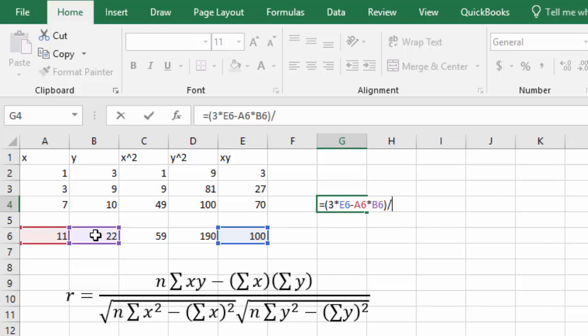Divided by, open a parenthesis for the denominator, and then we're going to do sqrt for the square root, and open a parenthesis. Sample size was 3, times the sum of the x squared, so I'll click that cell, minus the sum of the x's, squared, which is shift 6, close the parenthesis on the square root, and then we are going to multiply by another square root.